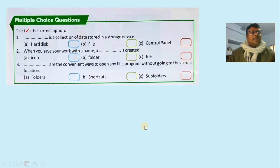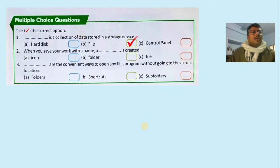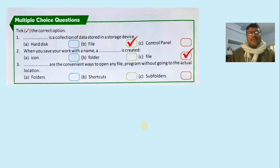Now for multiple choice questions: the first one — a dash is a collection of data stored on a storage device. The answer is 'file.' Second — when you save your work with a name, a dash is created; the answer is 'file.' Third — dashes are the convenient ways to open any file or program without going to the actual location; the answer is 'shortcut.' Write these in your copy for your learning.